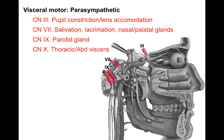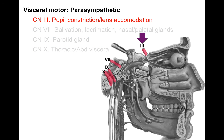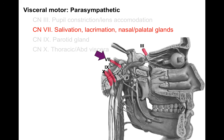Cranial nerve number 3 is responsible for constricting the pupil and lens accommodation. When someone shines a light in your eye, you don't have to tell your brain to constrict your pupil — it automatically happens. It's a parasympathetic response involving cranial nerve 3.